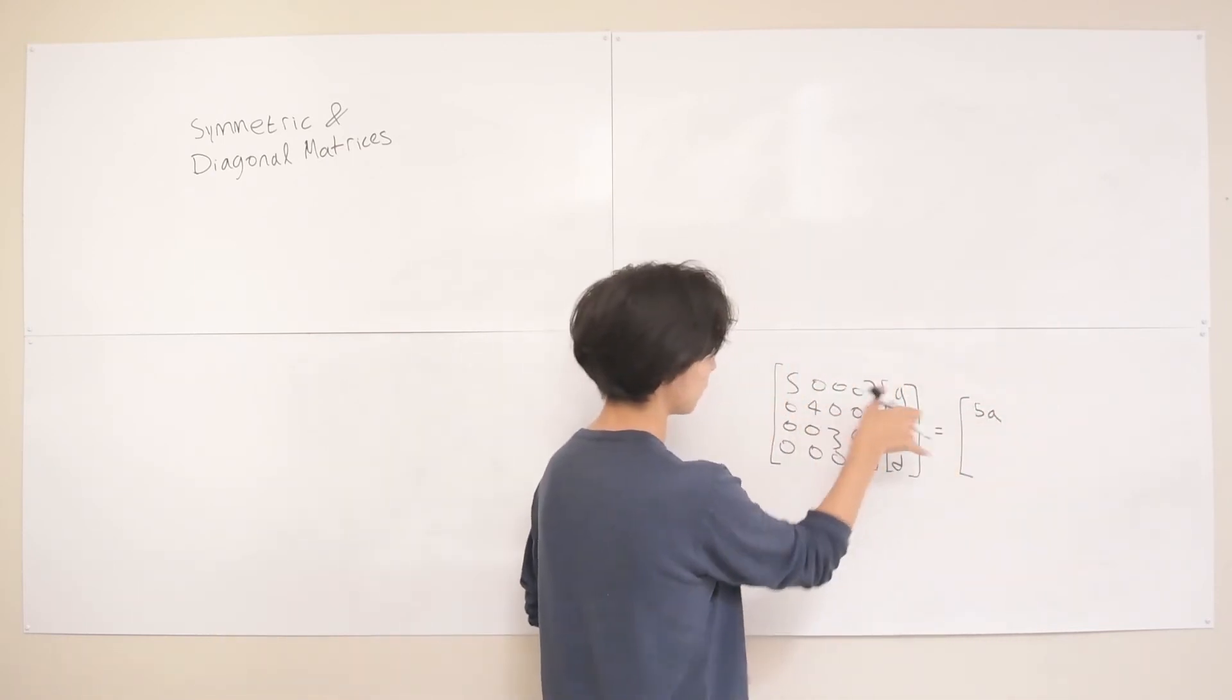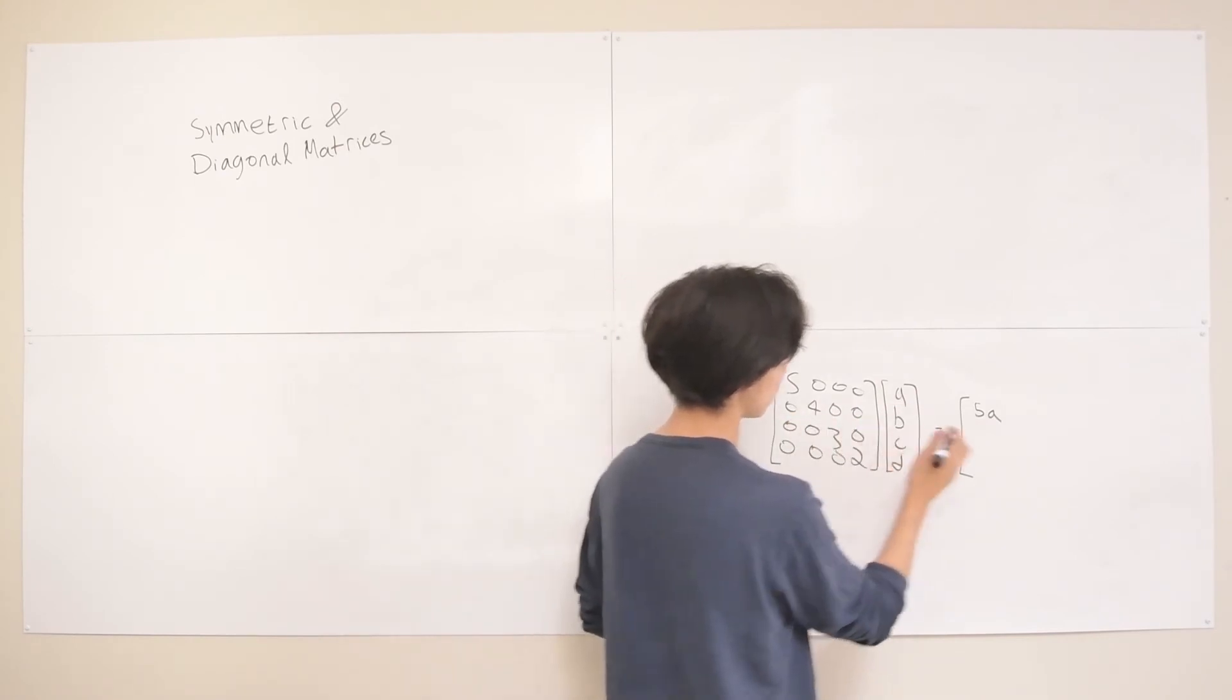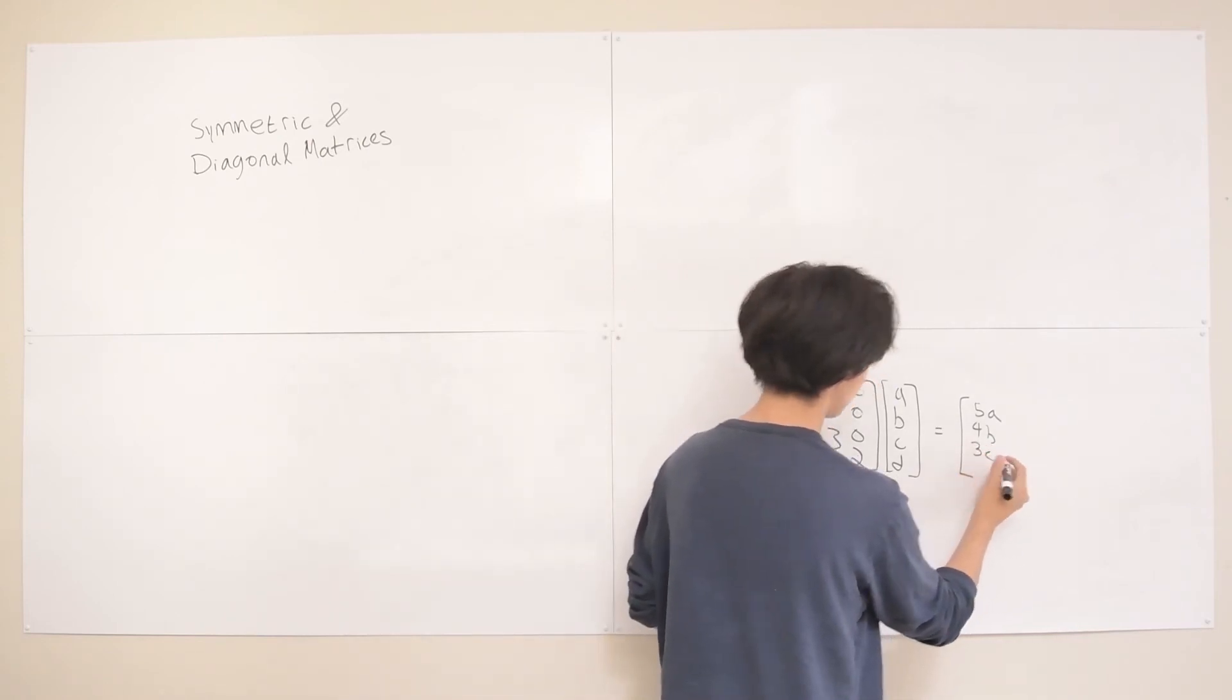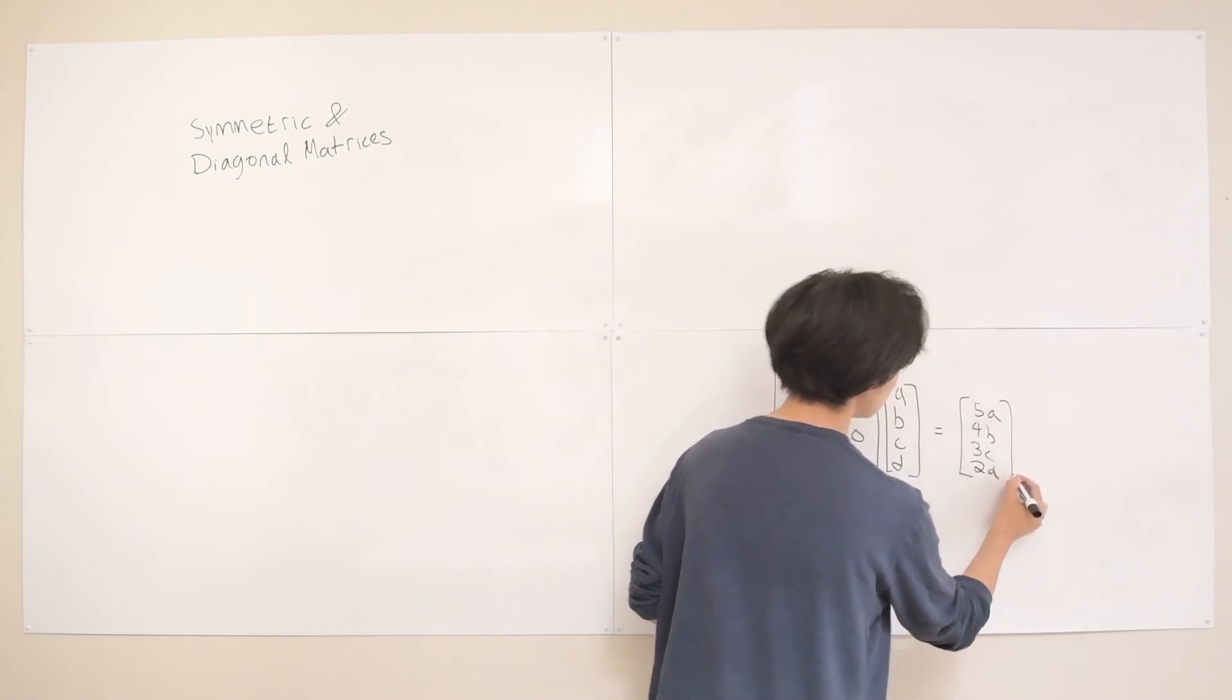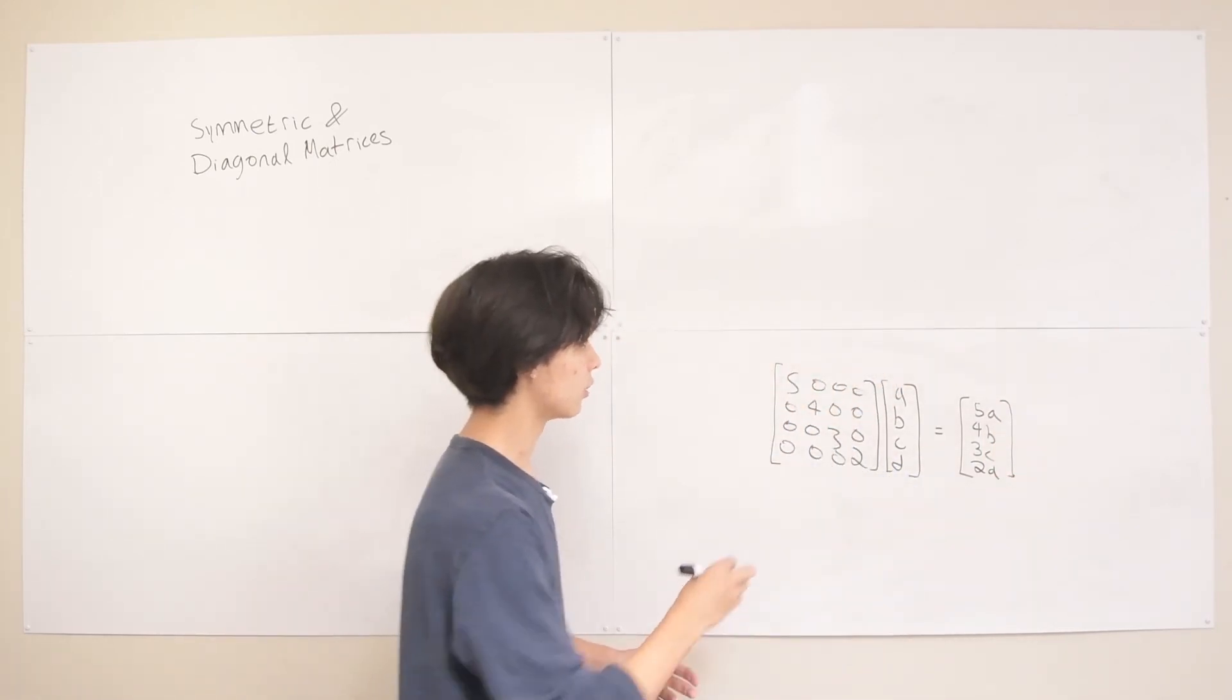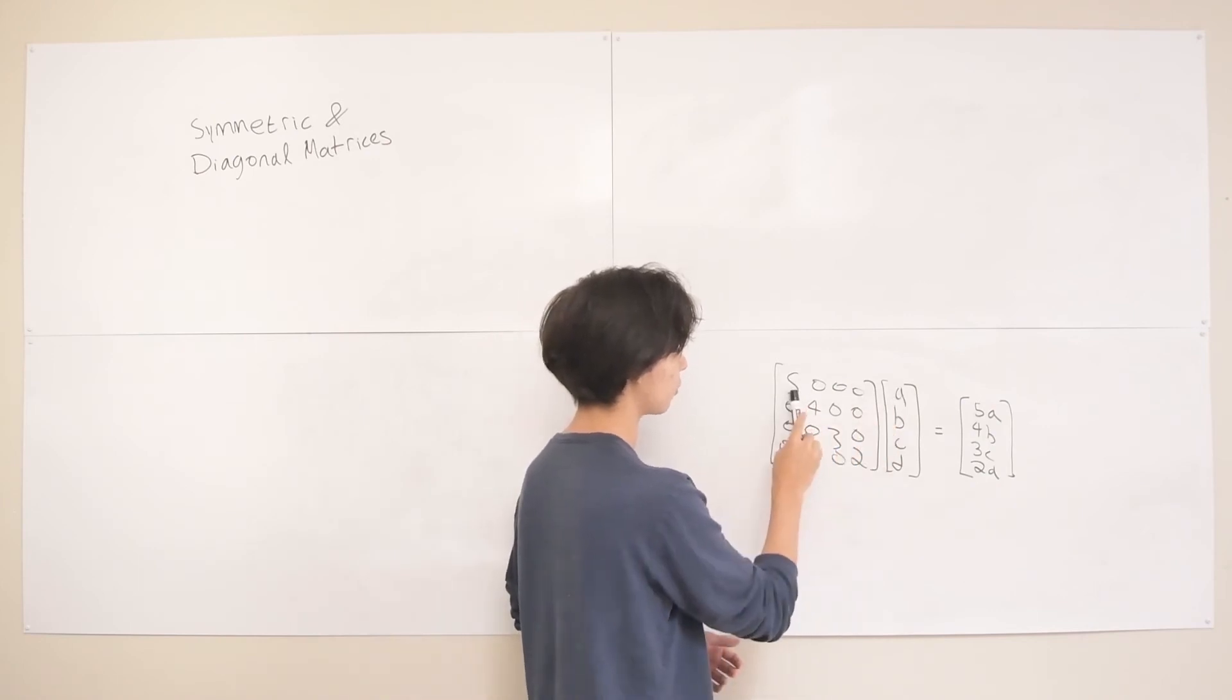Then we multiply this by this, and the 0s cancel everything out. So we just get 4B. Here, same thing. We just get 3C. Here, the same thing. We just get 2D. So you can see that this is basically equivalent to just taking the element-wise product of just multiplying each element here by its corresponding number. So it's very easy to just do in your head.